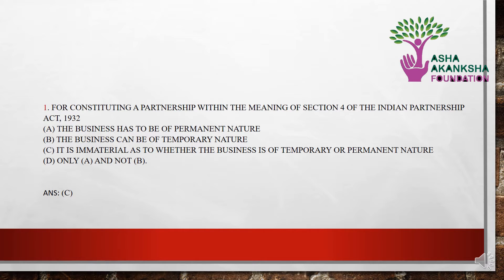The first question is: for constituting a partnership within the meaning of Section 4 of the Indian Partnership Act 1932, which of the following should be there? Options: (a) the business has to be of a permanent nature, (b) the business can be of temporary nature, (c) it is immaterial as to whether the business is of temporary or permanent nature, (d) only A and not B. The correct answer is option C — it is immaterial as to whether the business is of temporary or permanent nature.